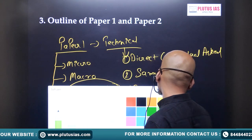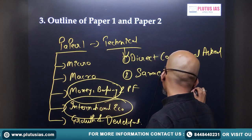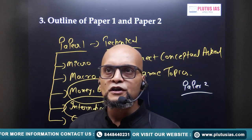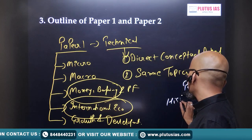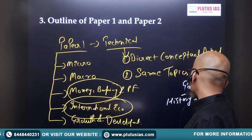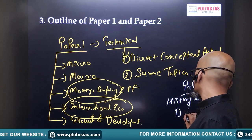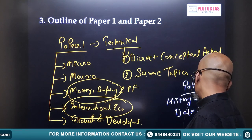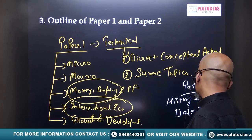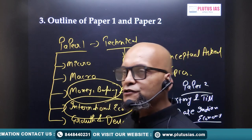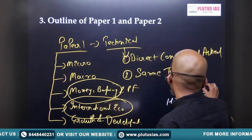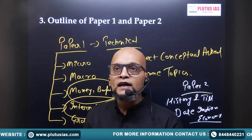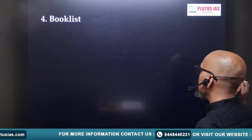Paper 2 is basically Indian economy. To cut the long story short, it covers the history and till-date development of Indian economy. You have to study and explore Indian economy in detail — which is also what GS paper 3 is. So paper 2 is going to help in your GS paper 3 as well. That's the brief outline of economics optional paper 1 and paper 2.